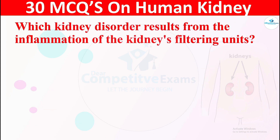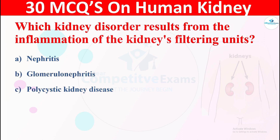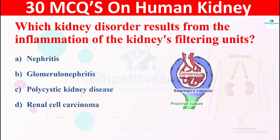Question 16: Which kidney disorder results from the inflammation of the kidney's filtering units? Options are: A) nephritis, B) glomerulonephritis, C) polycystic kidney disease, or D) renal cell carcinoma. The right answer is glomerulonephritis.